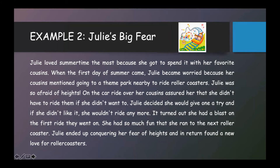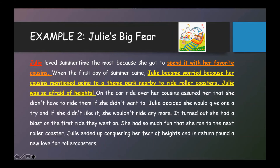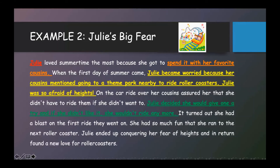Once again, we need to find the main character. Yes, Julie is the main character of the story. Now, what did Julie want? She wanted to spend time with her cousins. What's Julie's problem? Her problem was that her cousins planned to ride a roller coaster and Julie was afraid of heights. Now, what did she do to solve her problem? She decided she would give one a try, and if she didn't like it, she wouldn't try it anymore.